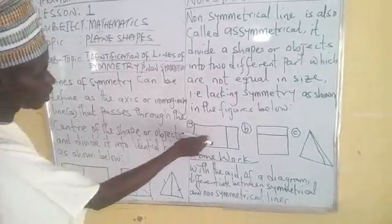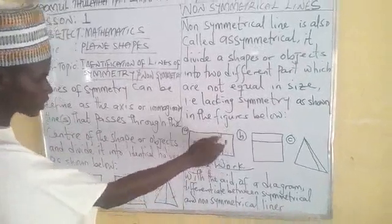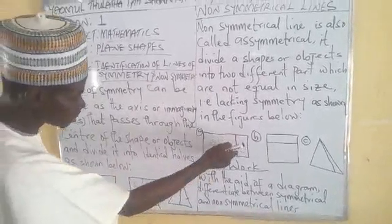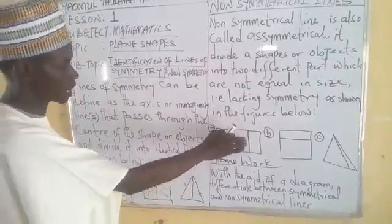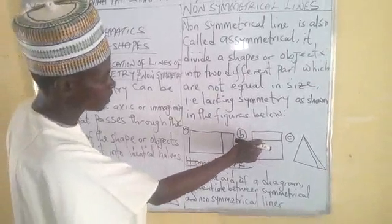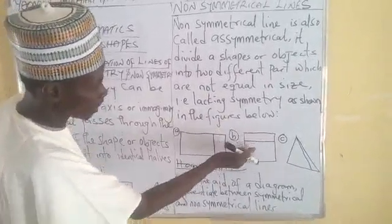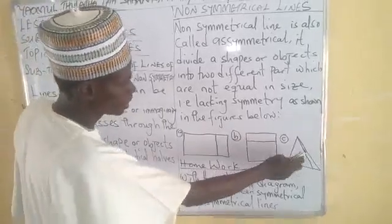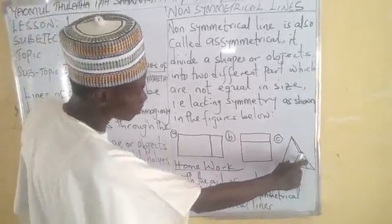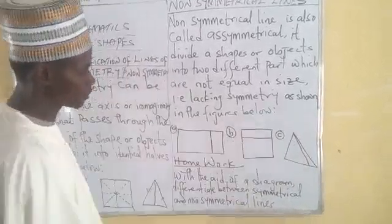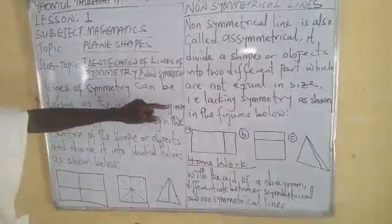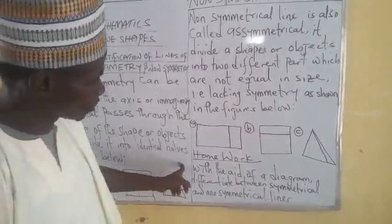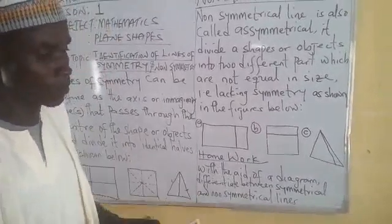If you look at this rectangle, the line here is not a symmetrical line, because the line did not divide the shape into two equal halves. This line is not a line of symmetry. The same with figure B — this is a square, and the line dividing the shape into two parts is not a line of symmetry since they are not the same size. The same with this triangle — divided into two different unequal parts, so it is also not symmetrical. Our homework for today is: with the aid of a diagram, differentiate between symmetrical and non-symmetrical lines.